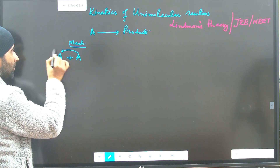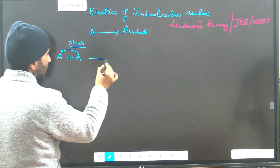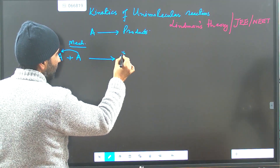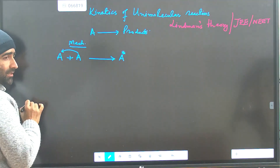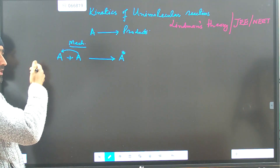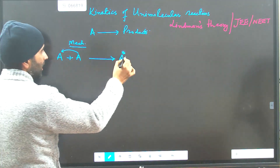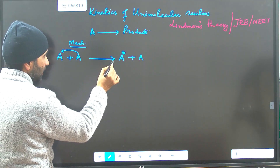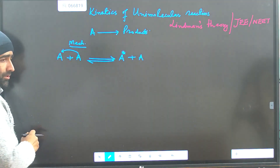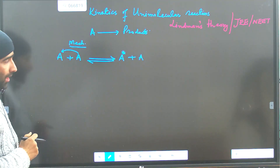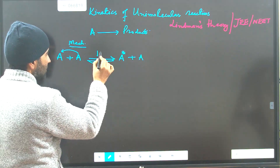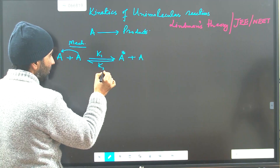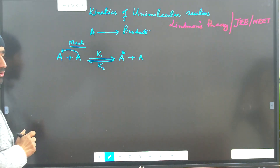There is a transfer of energy from one molecule to the other. The molecule which gains energy will be excited — it will have higher energy — and the other A will be left with lower energy. There is an equilibrium between these two steps. K1 is the rate constant for the forward reaction and K2 is the rate constant for the backward process.